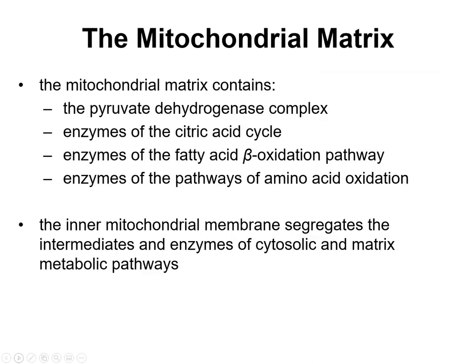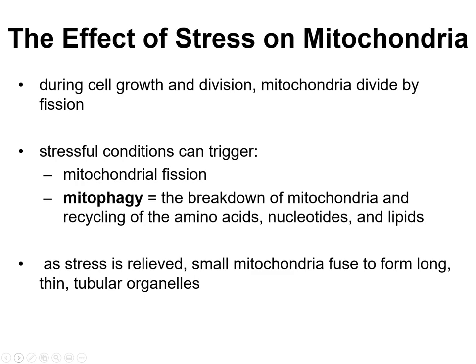This slide summarizes the mitochondrial matrix and the inner mitochondrial membrane and its purpose in terms of segregating things in the cytosol from the matrix. Mitochondria can undergo stress just like everything else in the cell. When stress conditions occur, it can cause them to split — which is called fission — or it can cause mitophagy, breaking down the mitochondria to recycle amino acids, nucleotides, and lipids. As stress is relieved, small mitochondria can fuse together to make longer, thin tubular organelles.